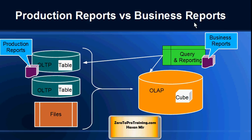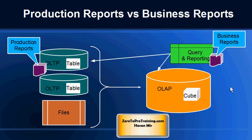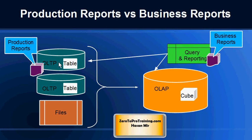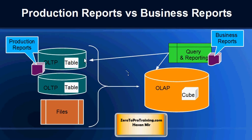Now let's talk about production reports and business reports. Keep in mind that business intelligence software is not used to handle day-to-day operations like managing suppliers, customers, or accounting. To manage day-to-day operations a company would use an application like ERP — enterprise resource planning. Production reports come from the software used to handle operations, and business reports come from the software handling business intelligence. So production reports and business reports are two different kinds of reports.